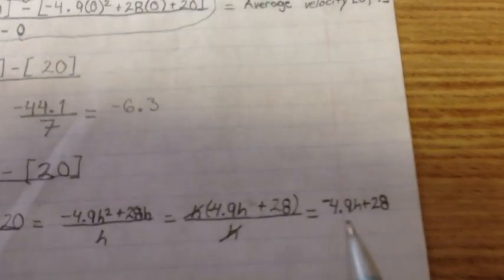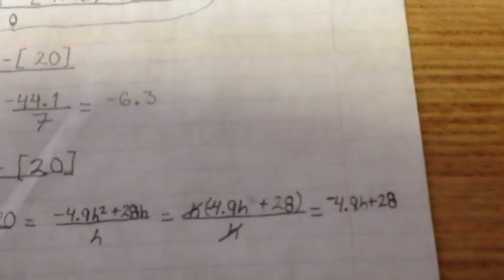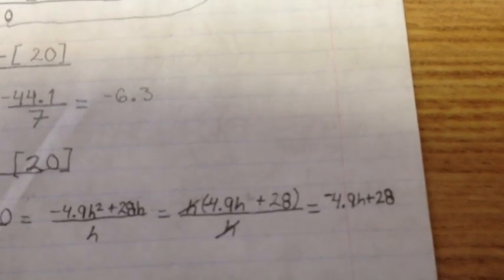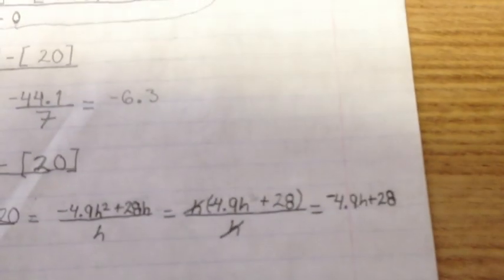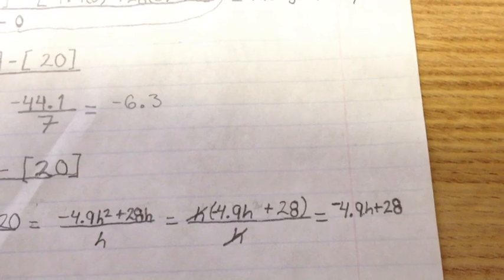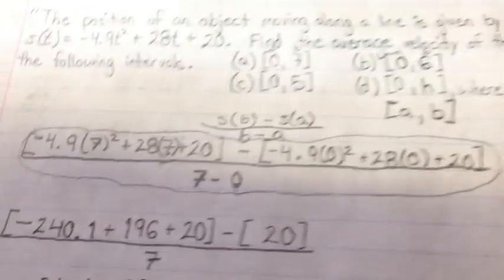You solve it out, and what you're going to end up with is this thing right here, -4.9h + 28. That's a lot more simple. Let's see if we can get that focus. There we go. That's a lot more simple than that right there.